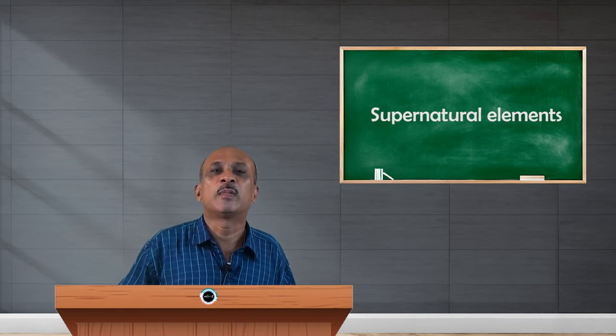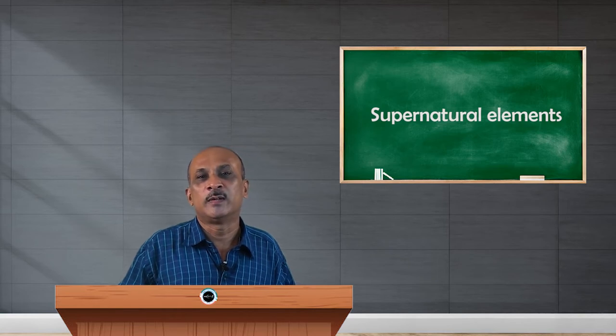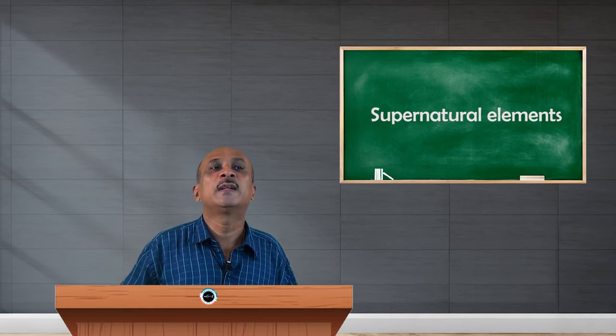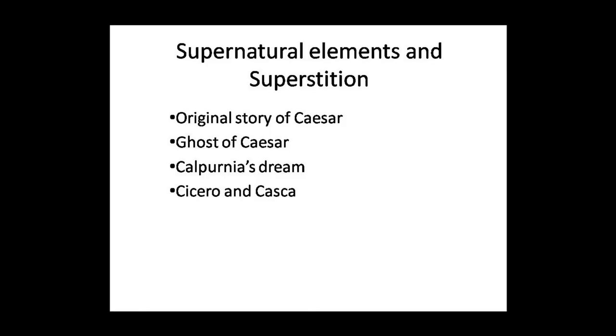Brutus was very much afraid, but still the ghost reiterates the point that they would meet at Philippi, the war field where it is believed that the ghost of Caesar is definitely going to take revenge on Brutus. That is one idea of the use of supernatural element in the form of the ghost of Caesar. Another aspect is superstitious elements in the play.